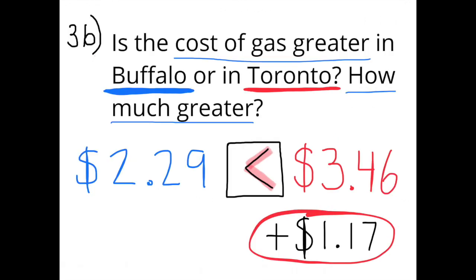Part b: Is the cost of gas greater in Buffalo or in Toronto? How much greater? Gas in Buffalo is $2.29 a gallon and gas in Toronto is $3.46 a gallon. In Toronto, the price of gas per gallon is $1.17 more than it is in Buffalo.